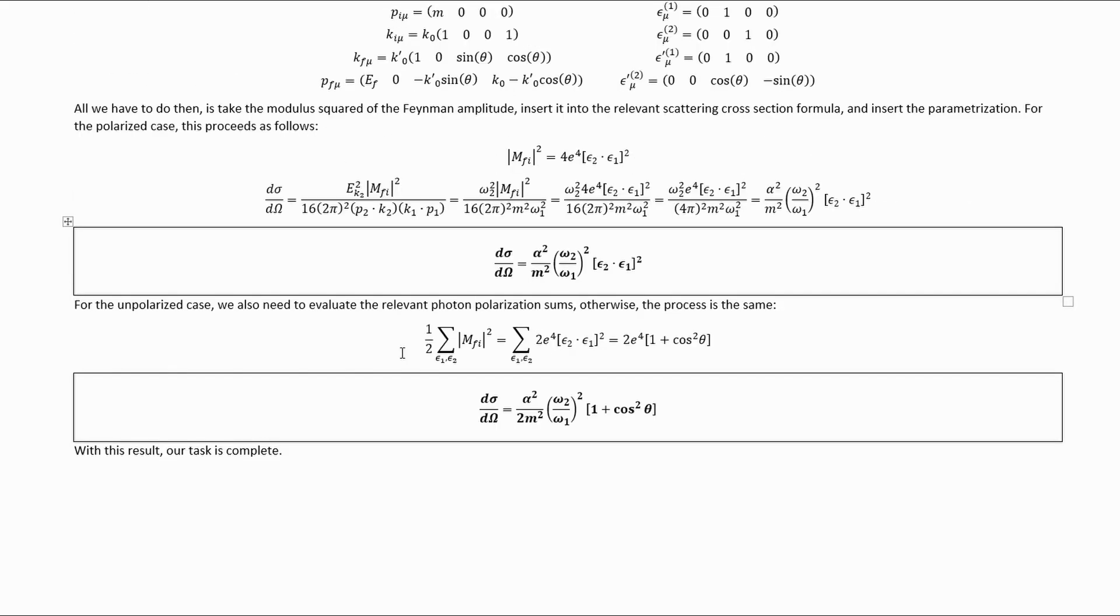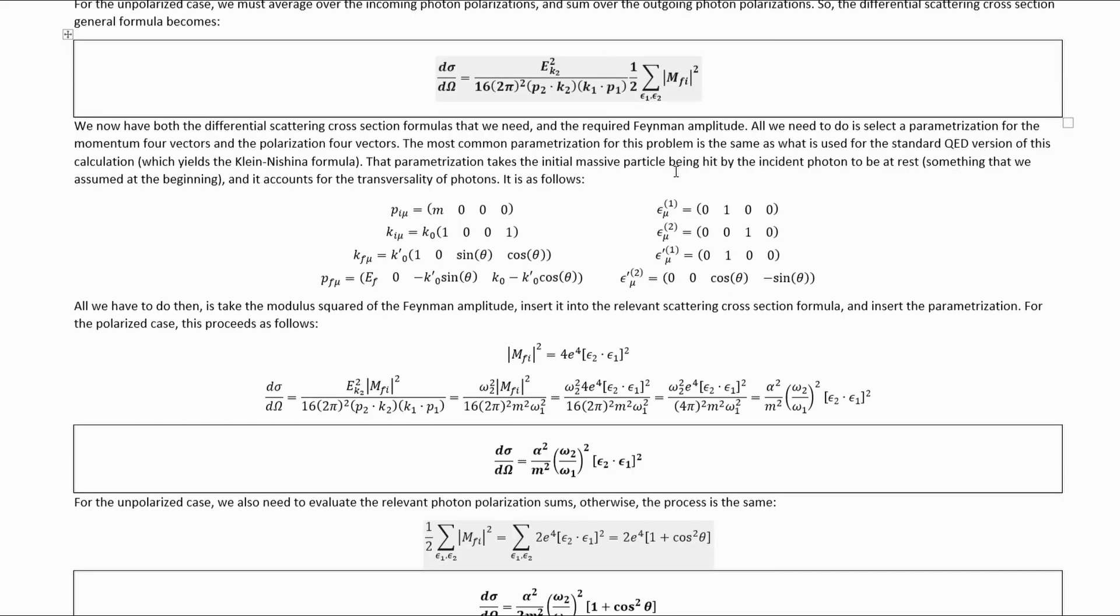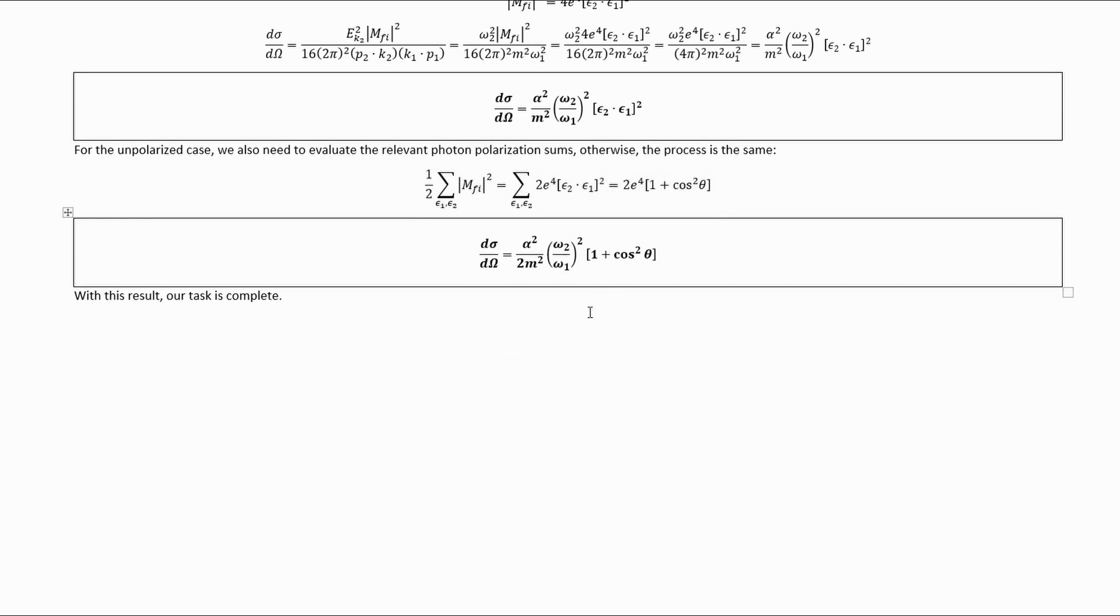To get the unpolarized result, all we need to do is those extra polarization sums. And of course, because we're actually averaging over the incoming photon polarization, we need to have that factor of a half there. This ultimately gets us this result, which we can then insert into the unpolarized differential scattering cross-section formula that we had above. Doing that gives us this other of the two final results.